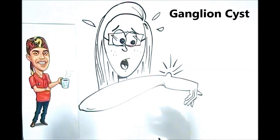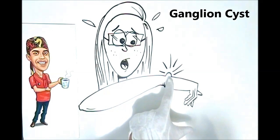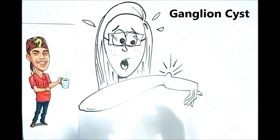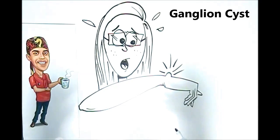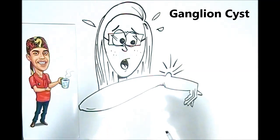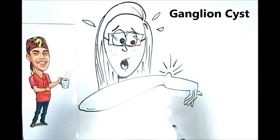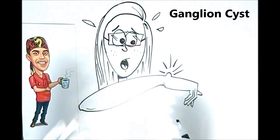So this is Jenna, and she woke up this morning and noticed that there was this painless bump on the back of her hand, after going for an extended hike yesterday over a lot of rough terrain with several slips and falls and using some walking sticks. She obviously wants to know what this bump is. So she goes in to see her doctor and they tell her it's a ganglion, or the plural, ganglia.